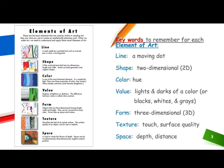Number two — shape: a flat enclosed area that has two dimensions, length and width. Artists use both geometric and organic shapes. Number three — color: this is one of the most dominant elements; it is created by light.